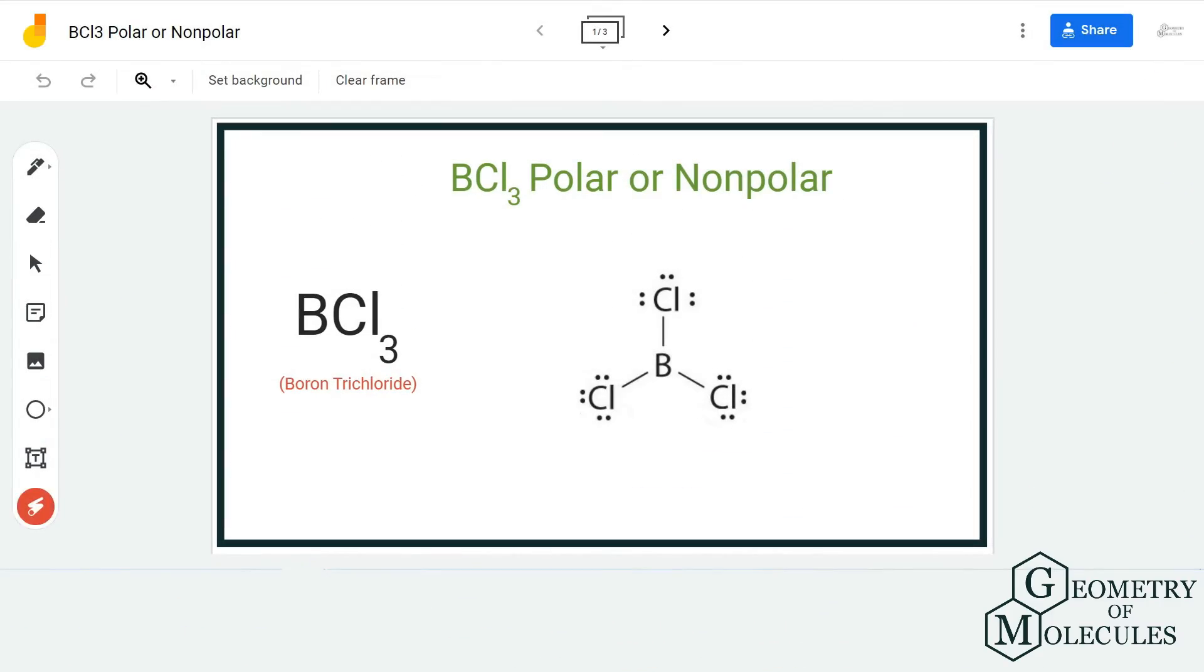Hi guys, welcome back to our channel. In today's video we are going to help you determine if BCl₃ is a polar or non-polar molecule. To determine its polarity, we first need to look at its Lewis structure, then check the differences of electronegativities of the atoms involved, and lastly check if there is a net dipole moment in this molecule.